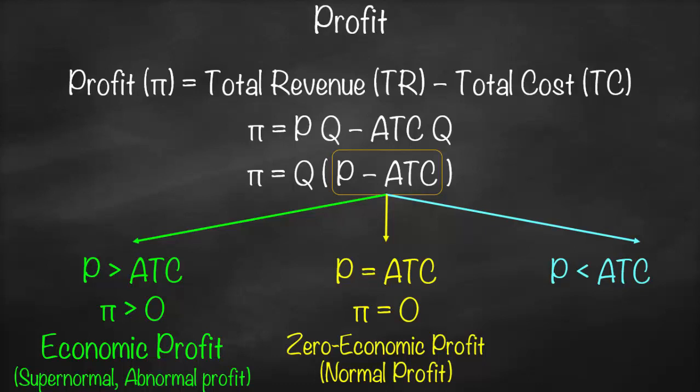Our last scenario is when price is lower than average total cost. It means that price minus average total cost will be negative, so our profit will be lower than zero — which means we make a loss.